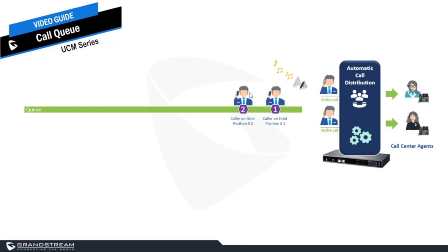By default, Music on Hold plays automatically when a customer calls the queue. You can customize it by creating a Music on Hold class that includes a greeting, music, or even an engaging message to promote certain products or deals. A professionally recorded Music on Hold always creates a good first impression when customers call your business. In addition to Music on Hold, you can enable some of the built-in announcements to inform the callers of their status while waiting in the call queue. You can enable wait time announcements to let the callers know approximately how long it will take for an agent to answer their call.